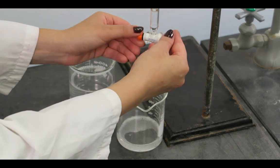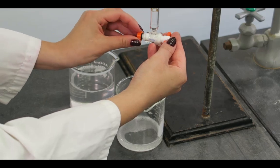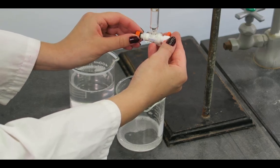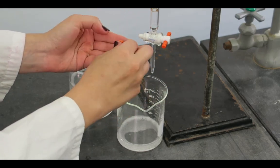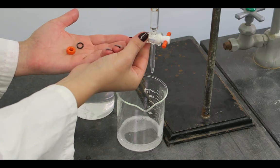The stopcock must be taken apart to be cleaned. First, remove the teflon nut, the rubber washer, and the teflon washer. Then, remove the stopcock.